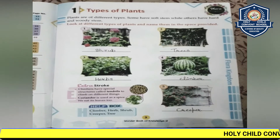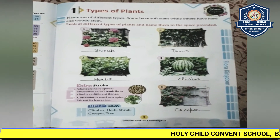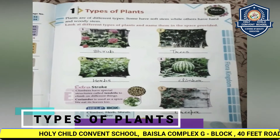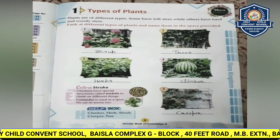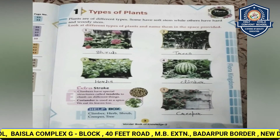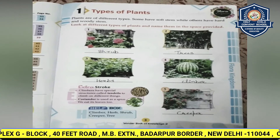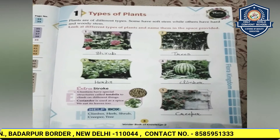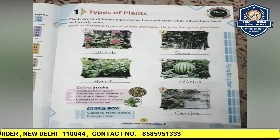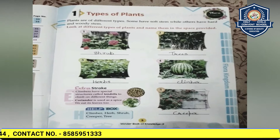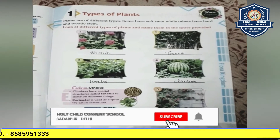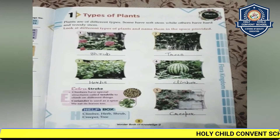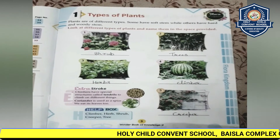Hello everyone. Today in Class 2 GK, we will study about the types of plants. First of all, let us know what is the importance of plants. Plants are very important for our nature as they give us oxygen to breathe. They are living things; they keep the environment safe and clean. Plants are our friends — plants humare dost bhi hote hain, jinse hum bahut cheezein lete hain, like rubber, wood, cotton, spices.